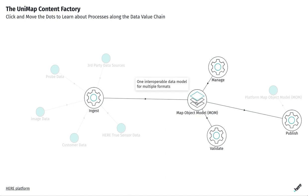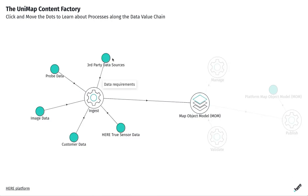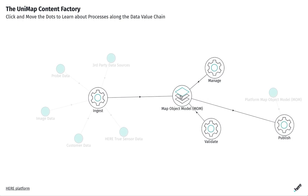There are several ways to describe reality, and different content domains have different models. Moreover, each content domain has its own repository with dedicated tooling, validations, and pipelines, making it even harder to keep everything aligned. All of this goes against interoperability. Hence, HERE has created a unified model — the Map Object Model, or MOM — which can comprehensively describe reality across all content domains.